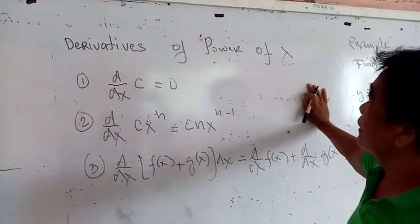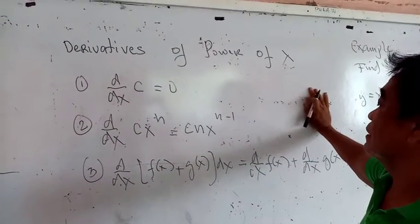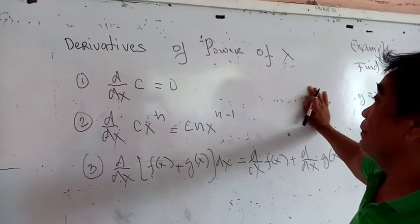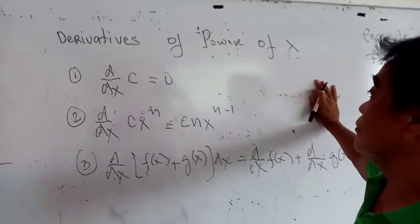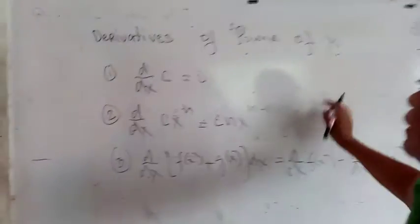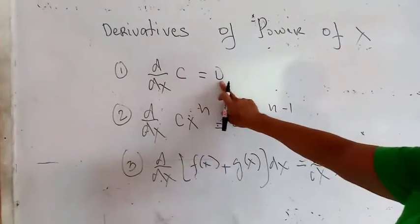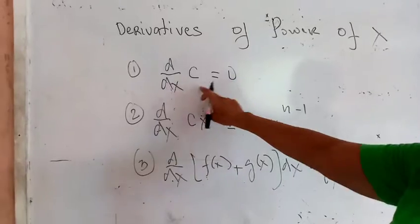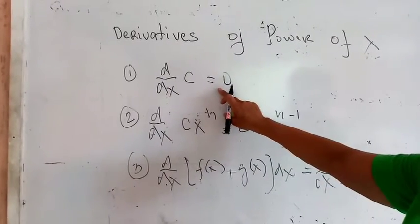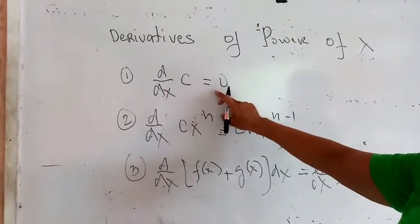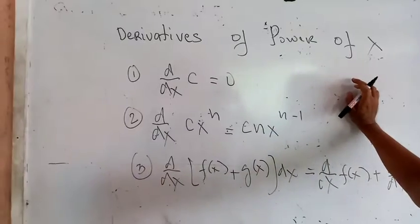We'll discuss the derivative of the power of x. The first formula for differential calculus says that the derivative of a constant is equal to zero. When we speak of a constant, that is a numerical value, and the derivative is understood to be zero.